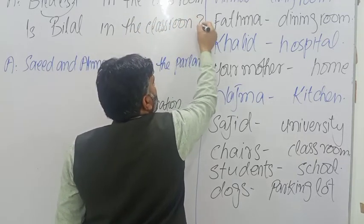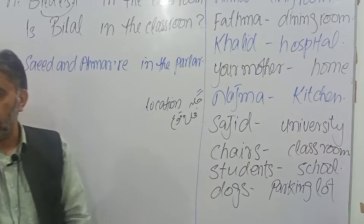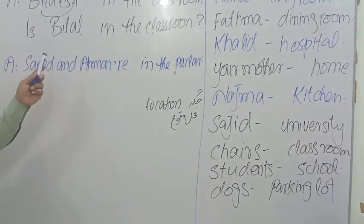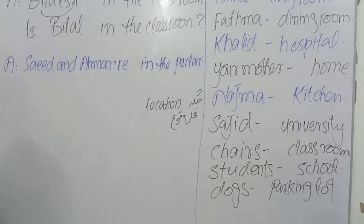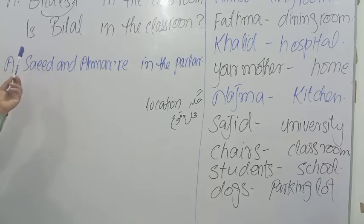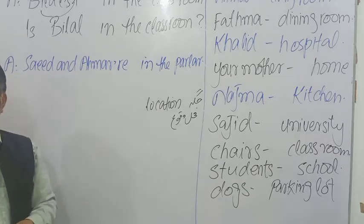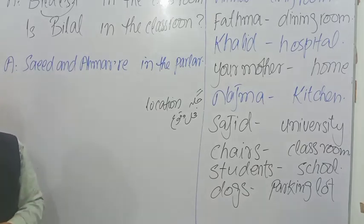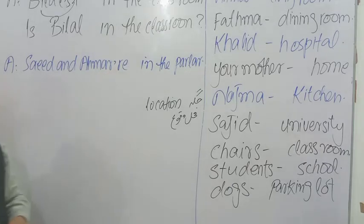And then we will use the sign of interrogation. Mostly students forget the sign of interrogation at the end of a question sentence, so try to use it. In the question sentence we should also use a little bit of question intonation — 'Is Bilal in the classroom?' — because we are not aware about where Bilal is, so there will be a question-type intonation.